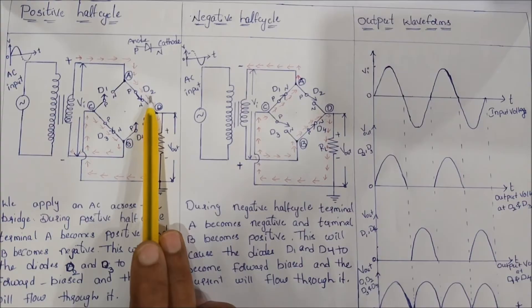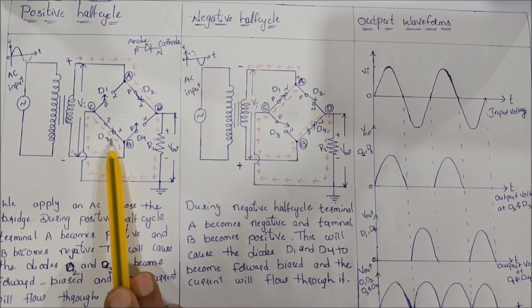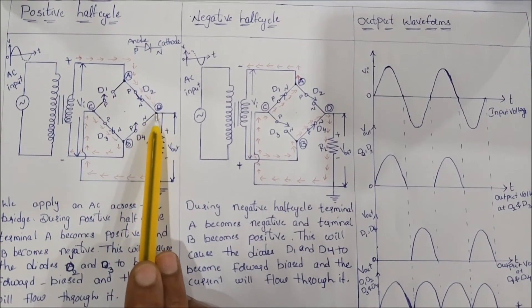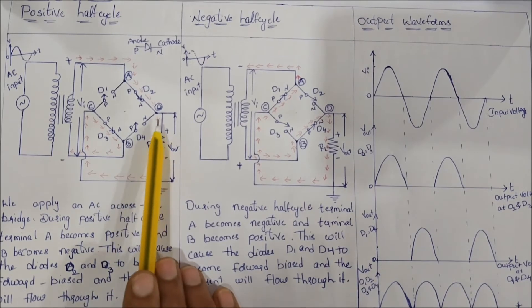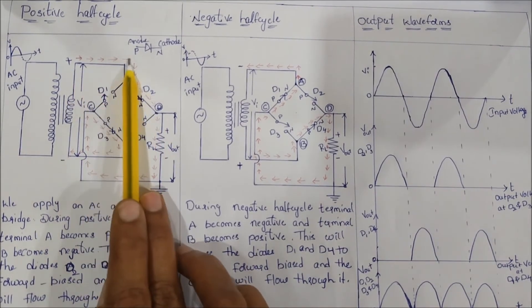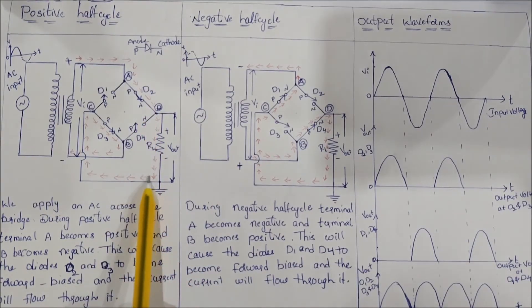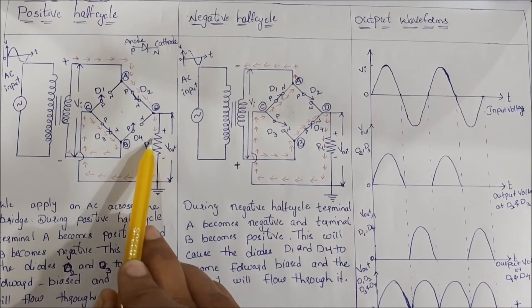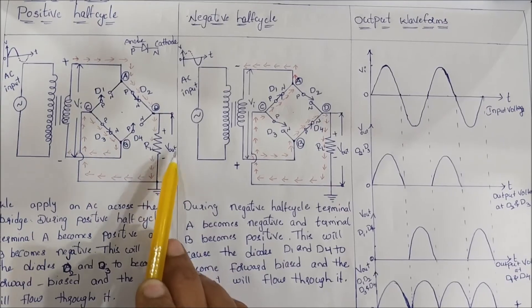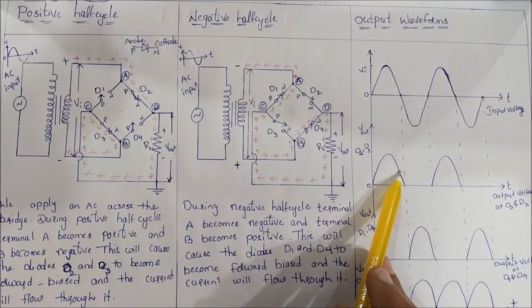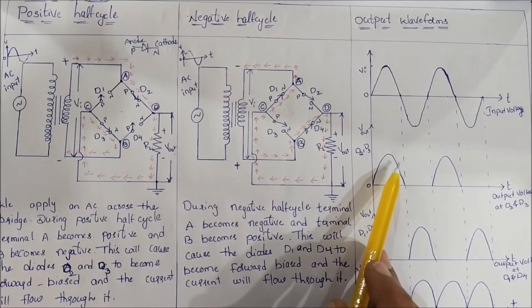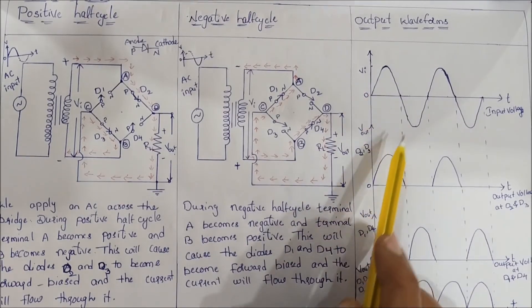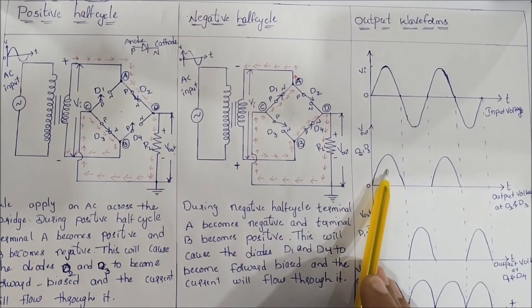So here is the current direction flowing through the circuit. The voltage is developed across the load. During the positive half cycle, diodes D2 and D3 are conducting. The output is the same as the input positive half cycle.